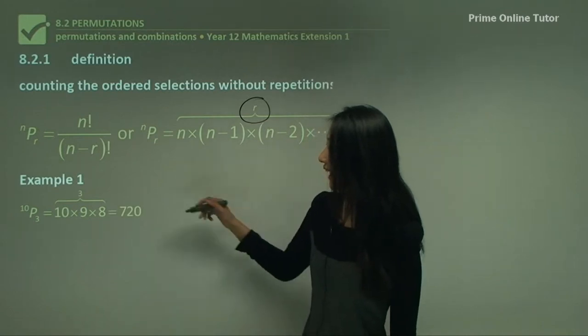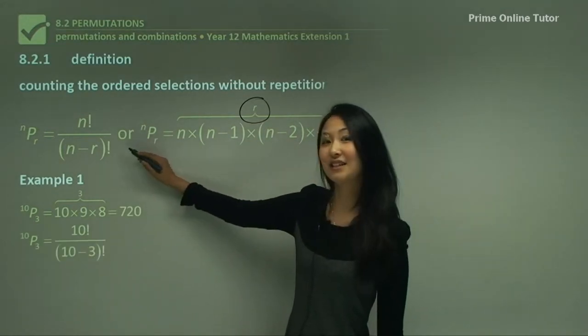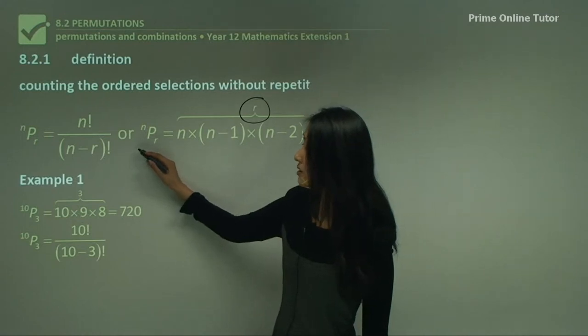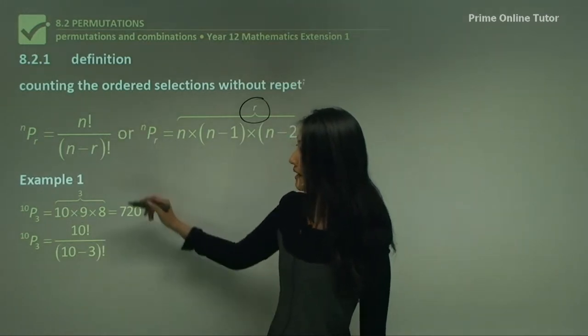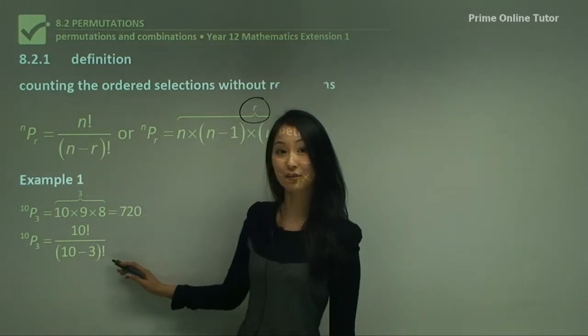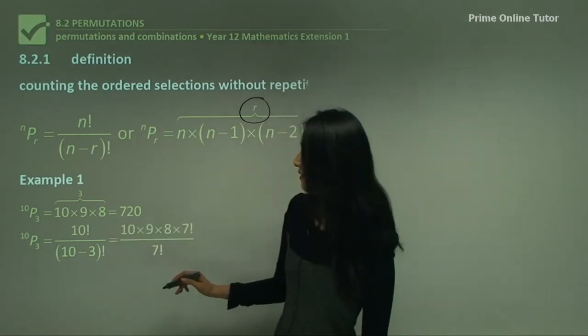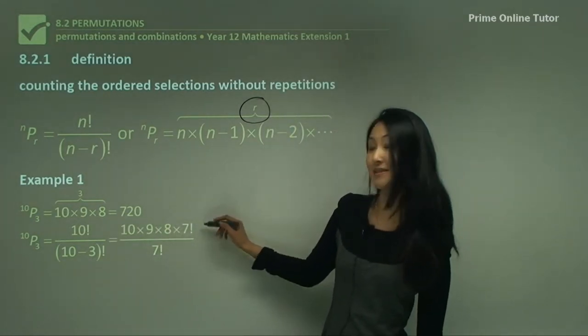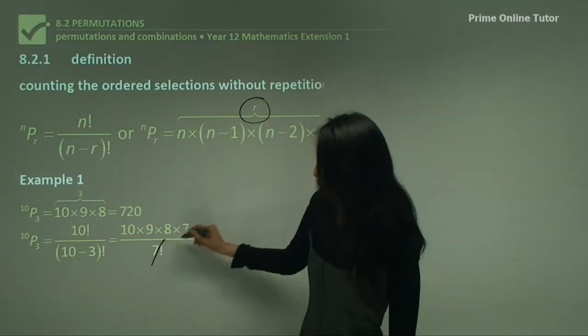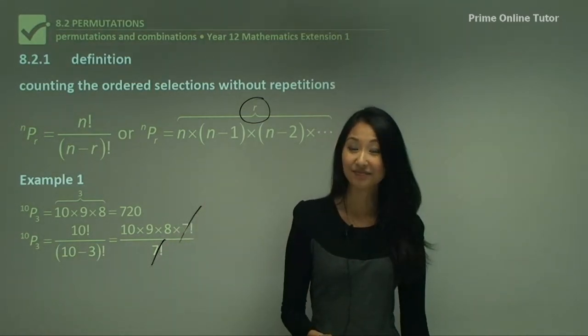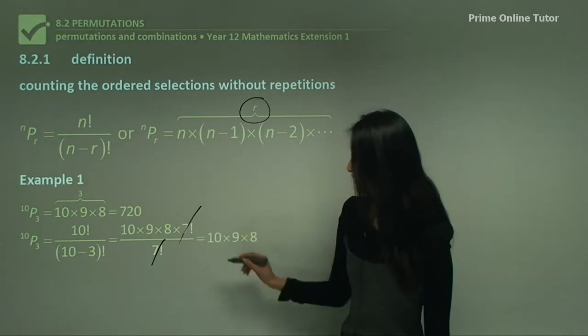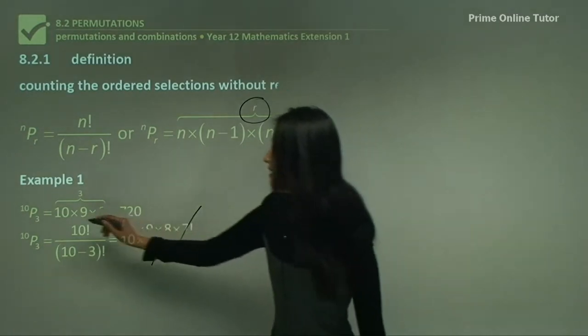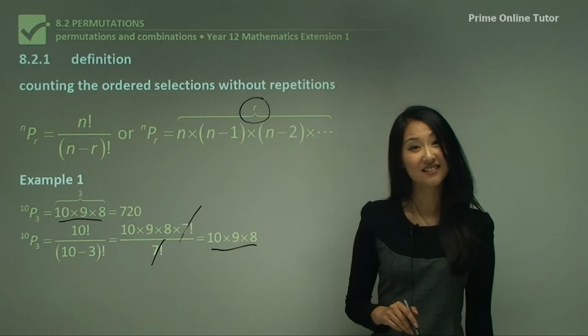That equals 720. Now, what about considering using this equation? Here we have 10!/(10-3)!. This can be written as (10×9×8×7!)/7!. This 7! can just cancel with that, and can you see how that leaves you with 10×9×8, just like that does here?